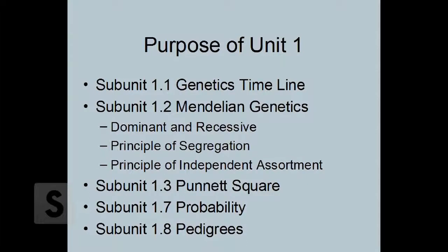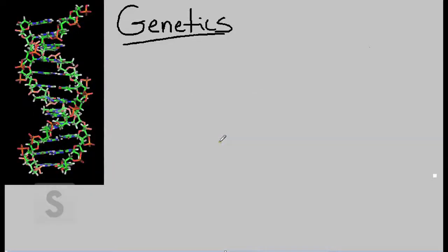For example, at the end of this introduction you'll have a brief lecture that will discuss the genetics timeline. You'll have a second mini lecture at subunit 1.2 which will talk about Mendelian genetics. You'll have another mini lecture at subunit 1.3 covering the Punnett square, at 1.7 covering probability, and finally at 1.8 covering pedigrees.